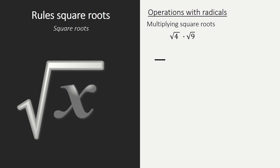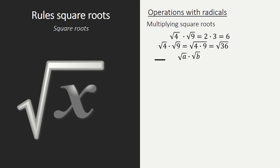So, multiplying square roots — how did that work? We have the square root of 4 times the square root of 9. We know the square root of 4 is 2 and the square root of 9 is 3, so 2 times 3 equals 6. However, we could also do this differently: the square root of 4 multiplied by the square root of 9 is the same as the square root of 4 times 9, which is the square root of 36, which equals 6. So the rule is: √a × √b = √(ab).